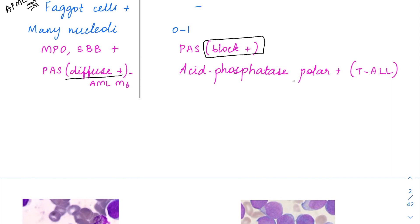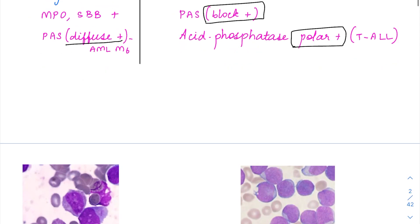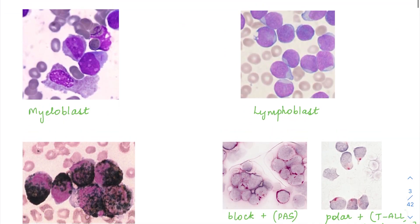The acid phosphatase in T-ALL is going to have a characteristic polar positivity. Looking at the images: the first image is a myeloblast — this cell is quite large compared to the second image, and there are multiple nucleoli in each cell. There is also the presence of an Auer rod visible here. This confirms it as a myeloblast.